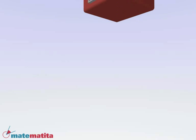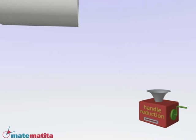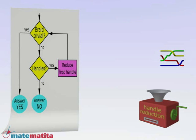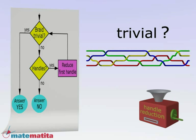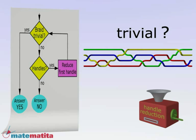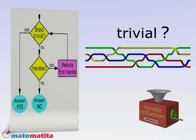Let's sketch the Handle Reduction algorithm. Take a pure braid. If there are no handles and the braid has at least one crossing, terminate, answering no. Otherwise, if there are handles, find the one that ends first and reduce it.